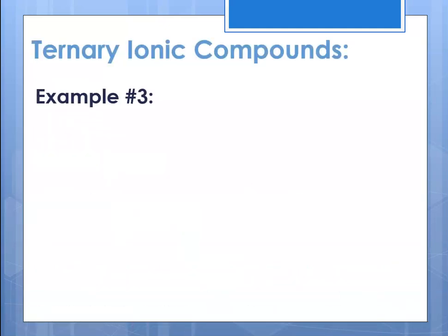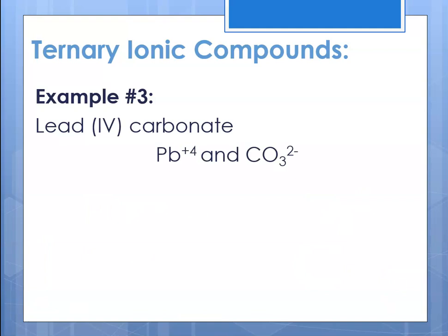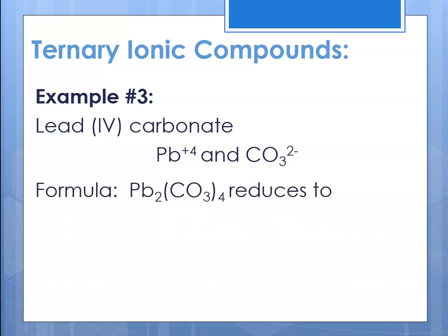Finally, ternary ionic compound example three: lead(IV) carbonate. Lead is Pb, and the Roman numeral four means it has a plus four charge. The carbonate ion has a negative two charge. Using the crisscross method, the formula would be Pb₂(CO₃)₄.